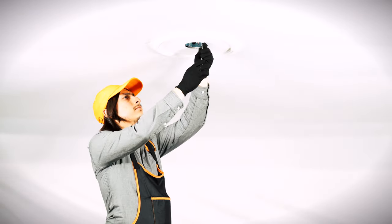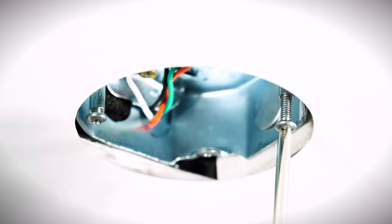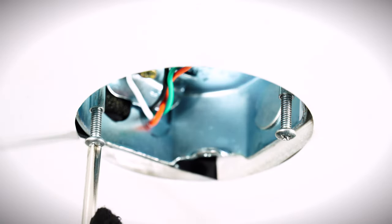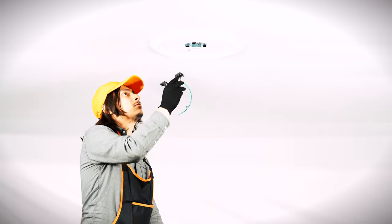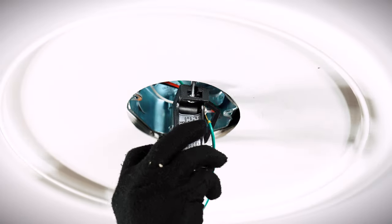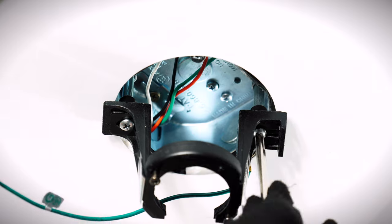At the ceiling box, loosen the two screws. Bring the hanger bracket up to the box and slide it over the screws. Tighten the screws securely.